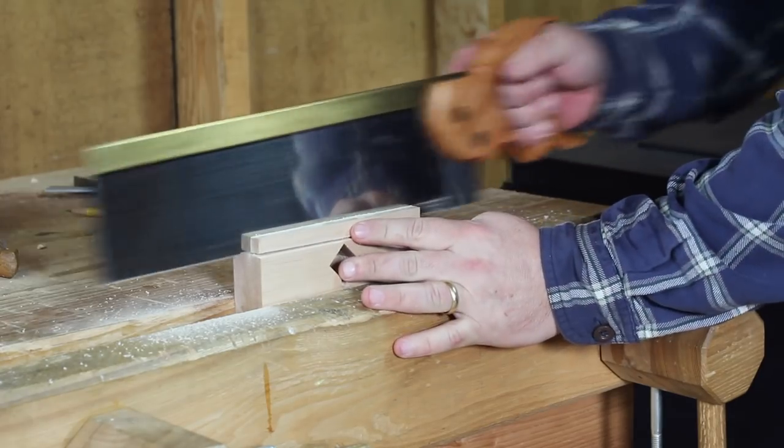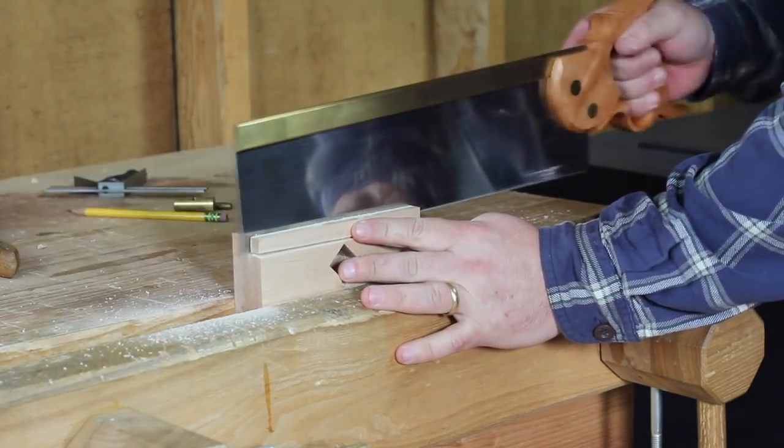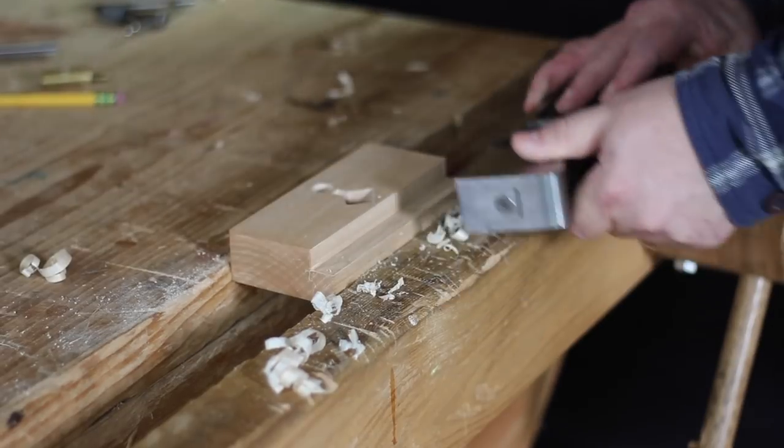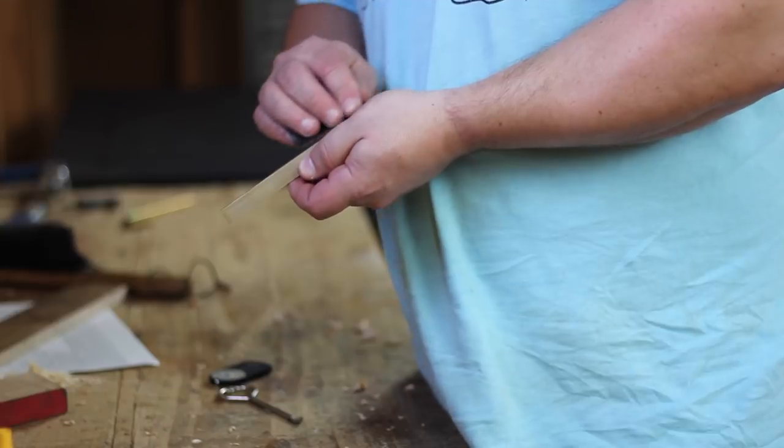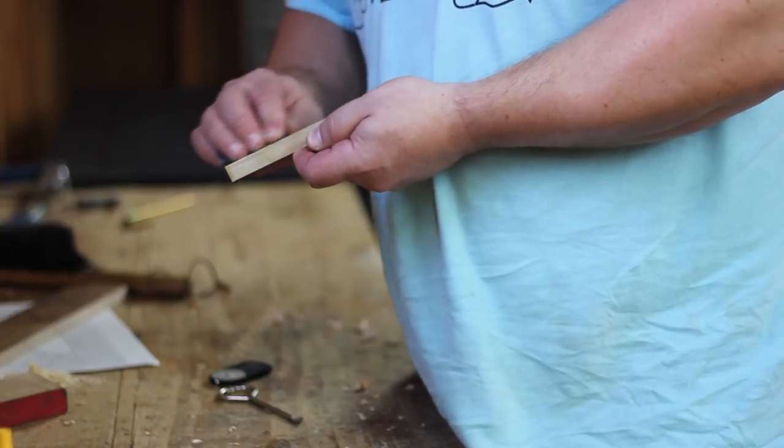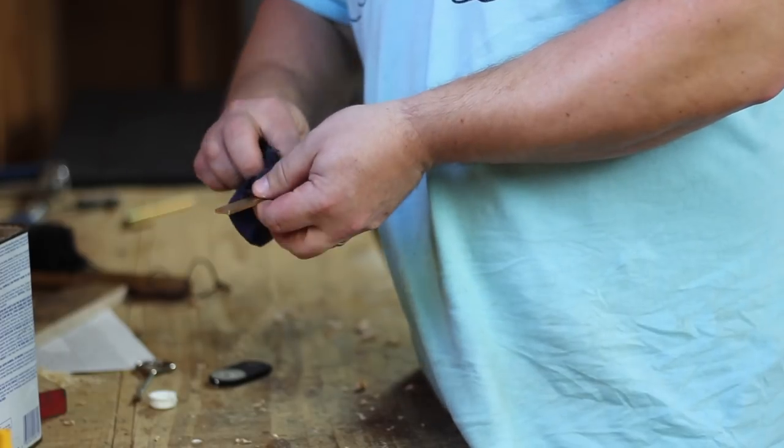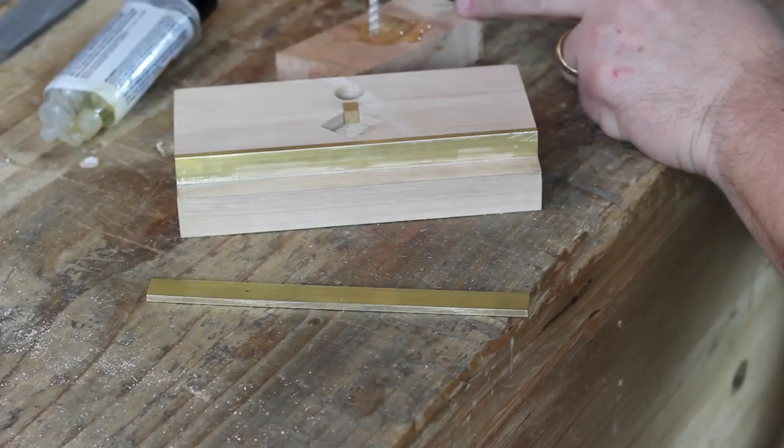I then created a rabbet in the fence by first sawing out the majority of the waste, then cleaning up to the marking gauge lines with a shoulder plane. I prepared some thin flat brass wear strips by lightly sanding off the oxidation and then cleaning them with acetone.